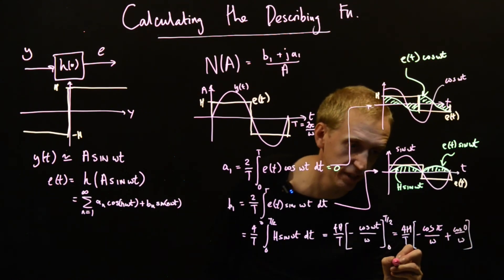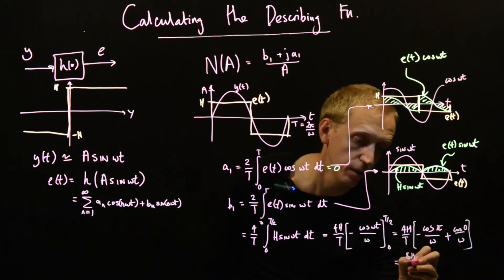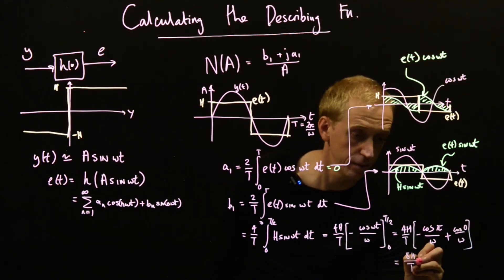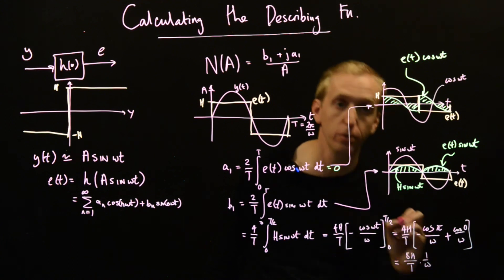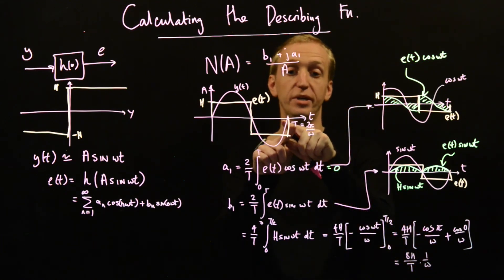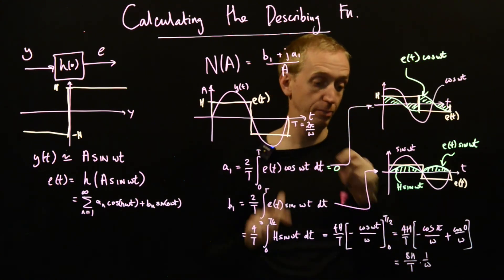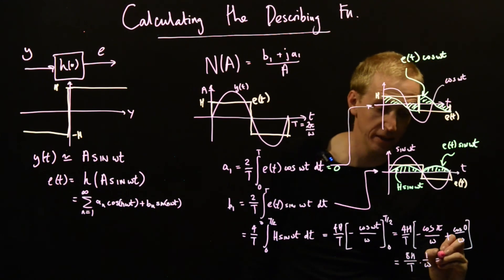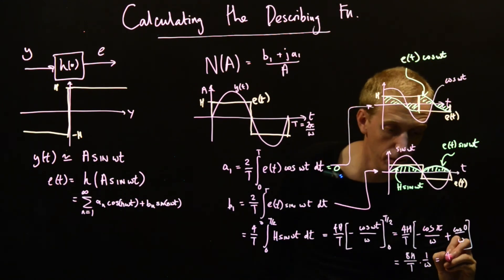And this is just equal to 8h over T times 1 over ω. But T times ω is just equal to 2π. So this whole thing is equal to 4h over π.